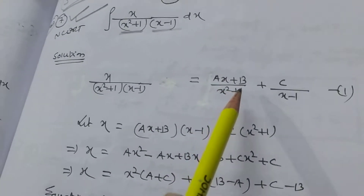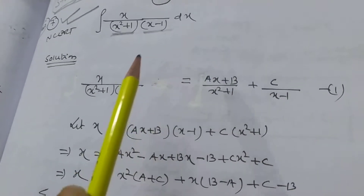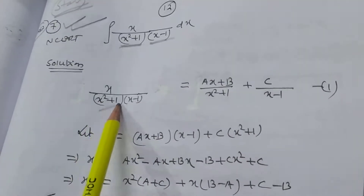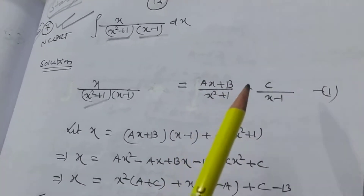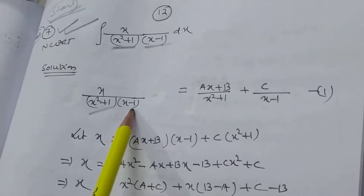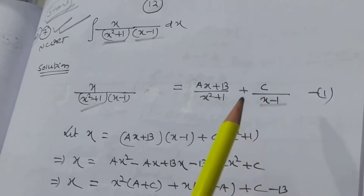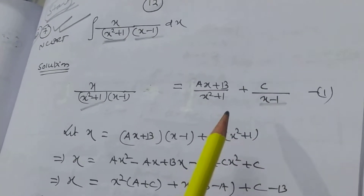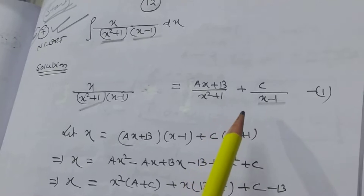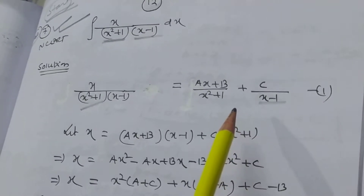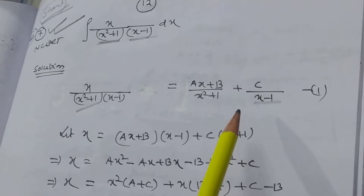It is an important point how you split and write x. One factor is quadratic, so you write (ax + b) by (x² + 1). The other factor is linear, so we write c by (x - 1). By comparing the coefficient of like terms, we can find the value of a, b, and c.